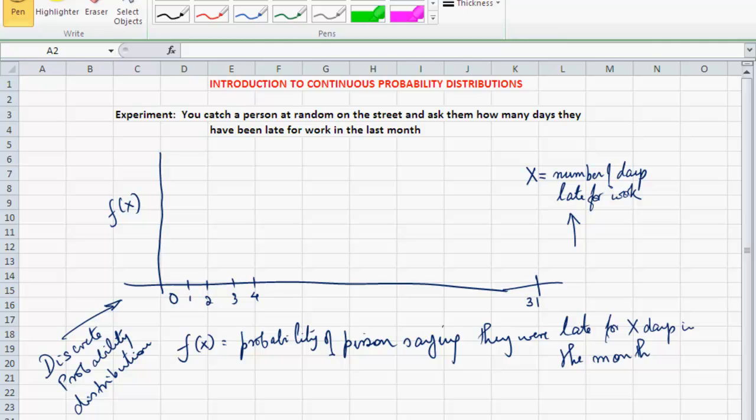The person will never come back and say I've been 2.3 days late or 2.7 days late or 3.8 days. I've either been late one day out of the month, 0 days, 15 days, 17 days and so forth. So, integer.